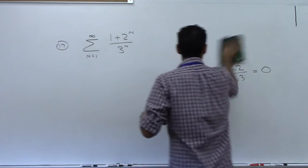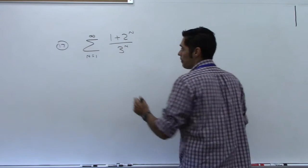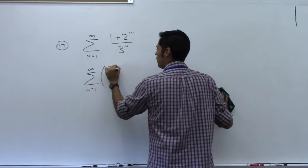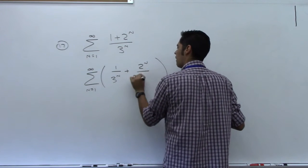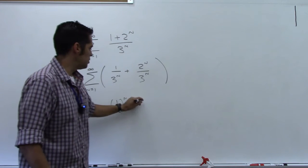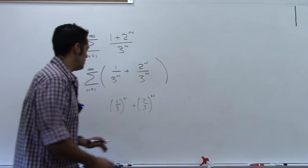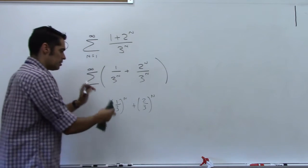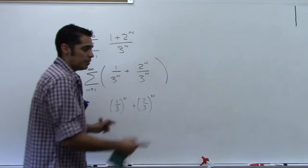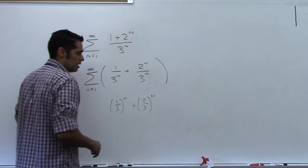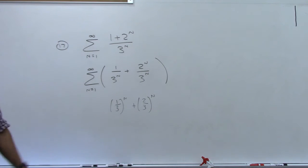Splitting into two series: 1/3^n + 2^n/3^n = (1/3)^n + (2/3)^n. Both are geometric with r = 1/3 and r = 2/3 respectively. Both have absolute value of r less than 1, so both converge. Use a over 1 minus r for each and add the answers together. This one converges.